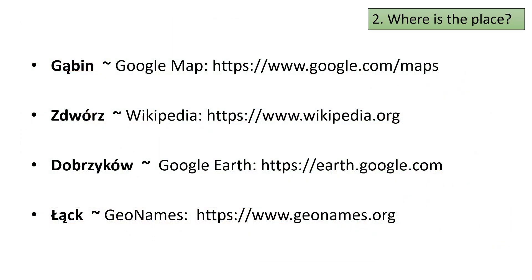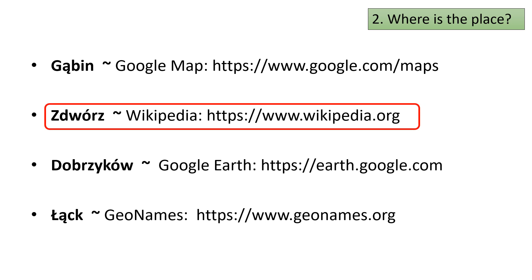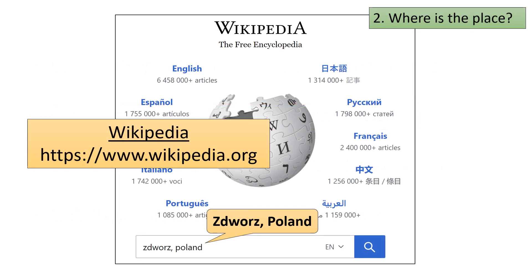Now we'll move on to finding Zdwóz, the second place we are looking for. This time we will use Wikipedia. Open up Wikipedia and enter the name of the place. As with Gąbin, you do not need to include special characters in the place name. Be warned that your results may seem a bit confusing at first, but don't become alarmed — everything will work out in the end.